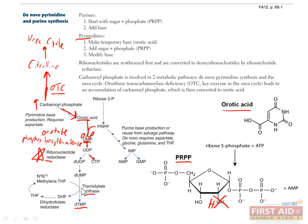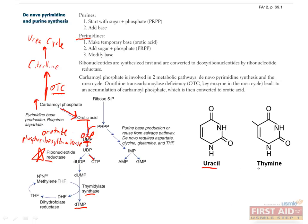This last step, catalyzed by thymidylate synthase, is especially important for a lot of reasons, including nutrition and pharmacology. As you can see from these structures of uracil and thymine, the only difference between them is this methyl group. A common molecular mechanism for adding methyl groups to molecules uses the coenzyme tetrahydrofolate, which in this case sends the methyl group to uracil to create thymine. After converting this methyl group, tetrahydrofolate becomes dihydrofolate, which requires the enzyme dihydrofolate reductase to cycle back to tetrahydrofolate.